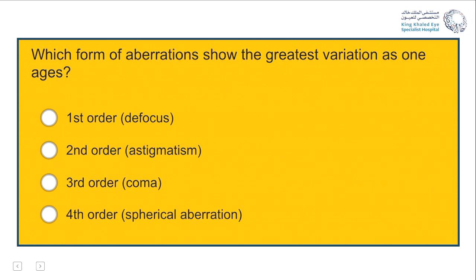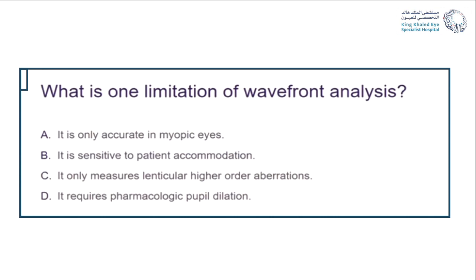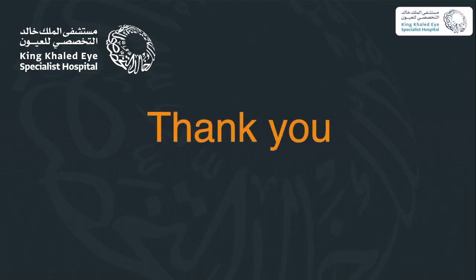Here is a question: which form of aberration shows the greatest variation with age? The answer is fourth order spherical aberrations. Another question: what is one limitation of wavefront analysis? The answer is B.